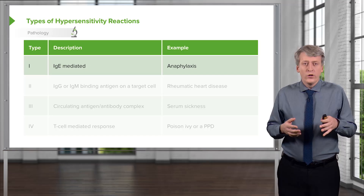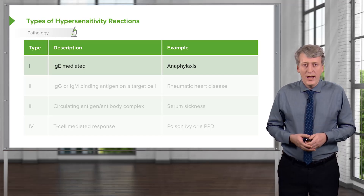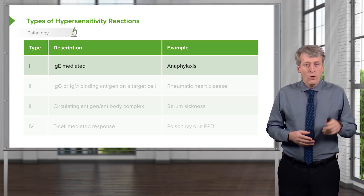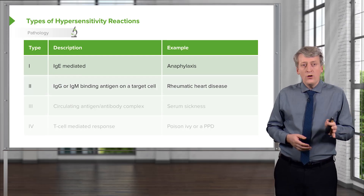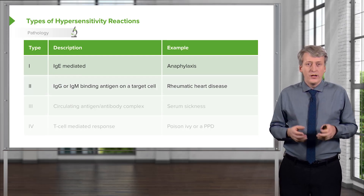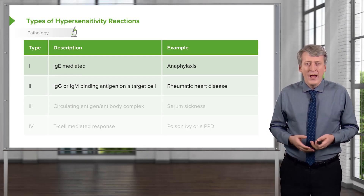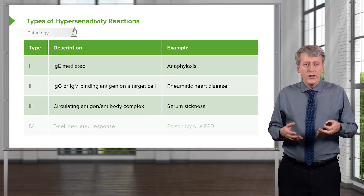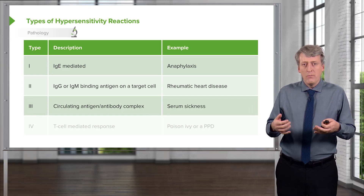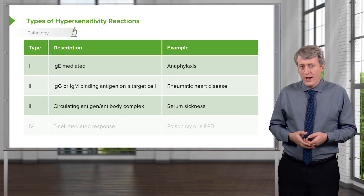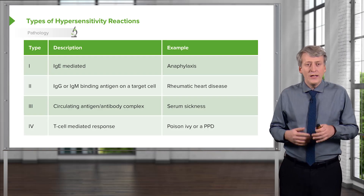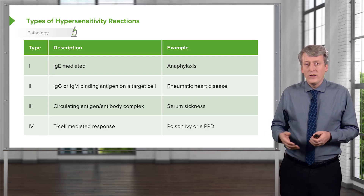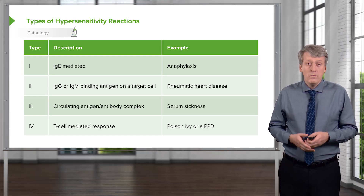There are generally four types of hypersensitivity reactions. Type 1 is IgE-mediated — an example would be anaphylaxis. Type 2 is IgG or IgM-mediated antigen on a target cell, and an example would be rheumatic heart disease. Type 3 is when there are circulating antigen-antibody complexes — an example is serum sickness. Type 4 is generally a T-cell-mediated response, such as poison ivy, a PPD test, or milk protein allergy presenting as blood in the stool in an infant.